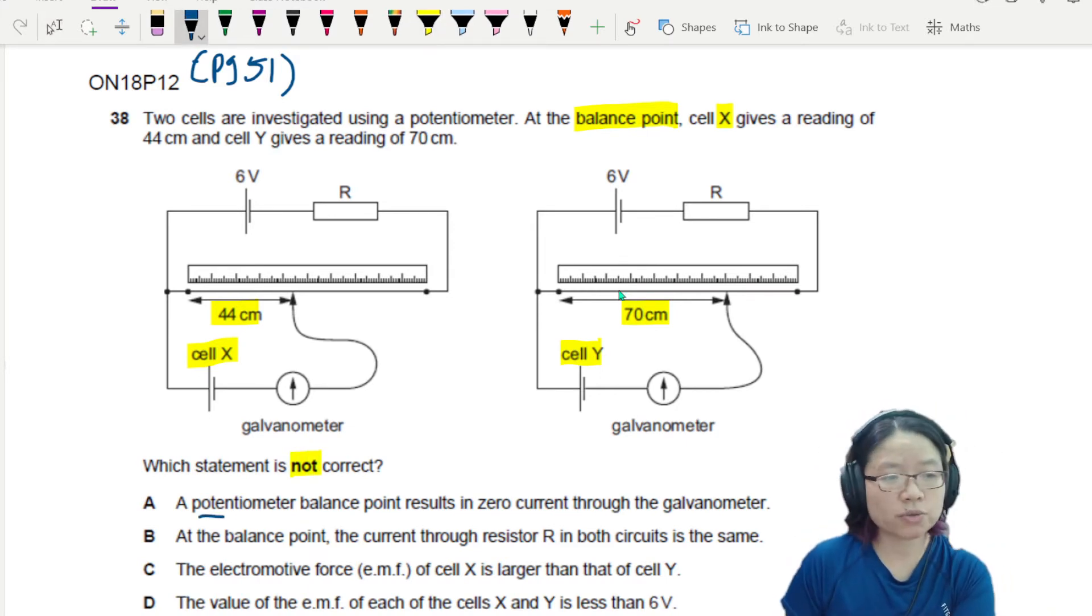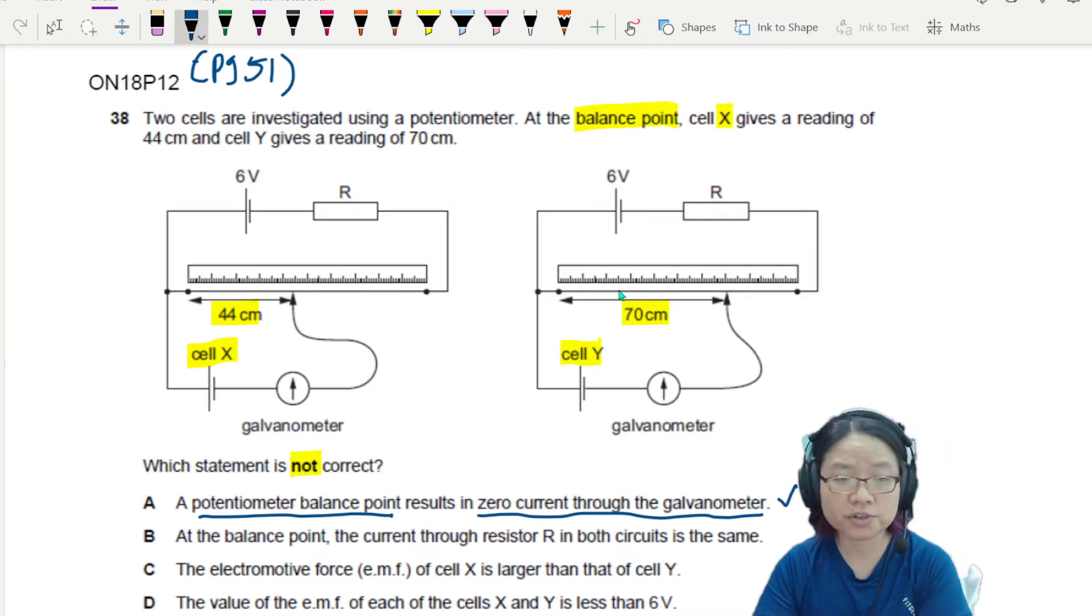A, the potentiometer balance point results in zero current through the galvanometer. So I guess this is the starting point of any potential circuit. Galvanometer, no reading, meaning there's no current.